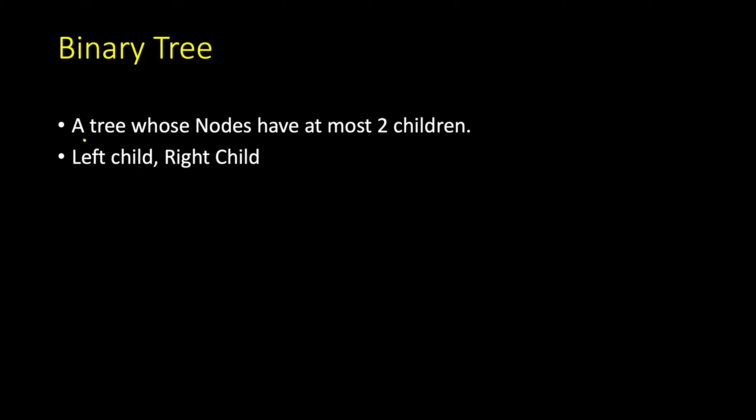So here we have a tree whose nodes can have at most two children. So at most does not mean exactly two. Every node cannot have two children because somewhere down the line you will have leaf nodes which by definition have zero children.